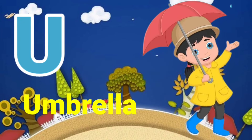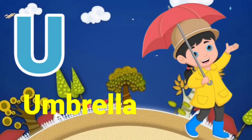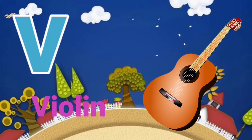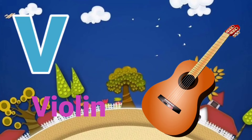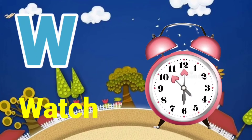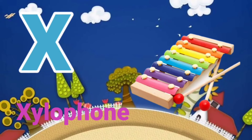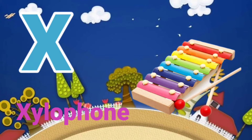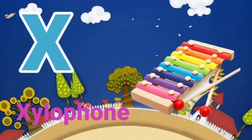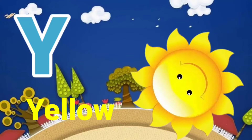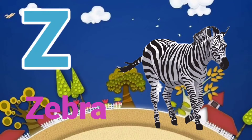U is for Umbrella, U-U-Umbrella. V is for Violin, V-V-Violin. W is for Watch, W-W-Watch. X is for Xylophone, X-X-Xylophone. Y is for Yellow, Y-Y-Yellow. Z is for Zebra, Z-Z-Zebra.